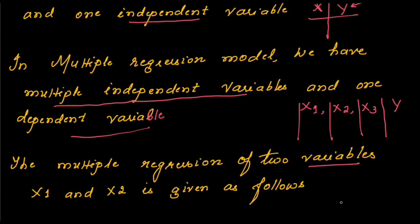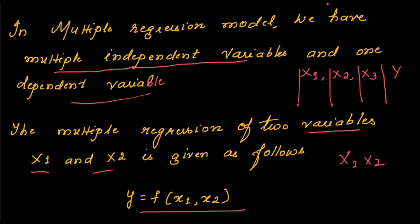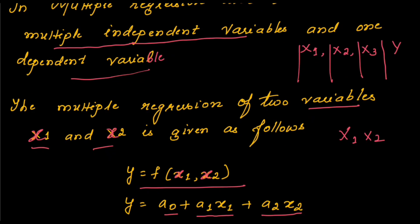Let us see the multiple regression of two variables, x1 and x2. The multiple regression of two variables x1 and x2 is given as y equal to f of x1, x2. This y is given by y equal to a0 plus a1 into x1 plus a2 into x2.